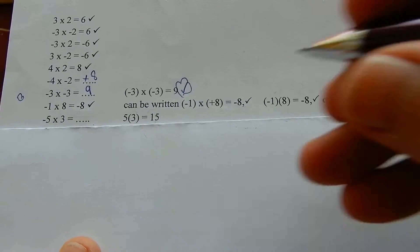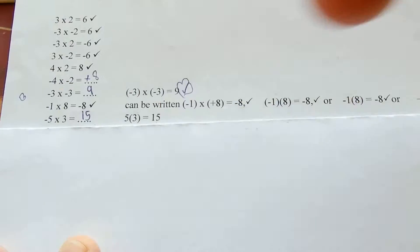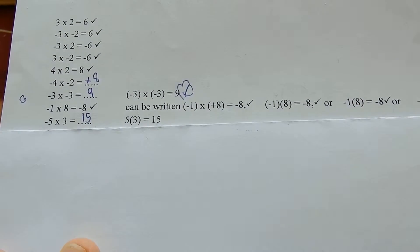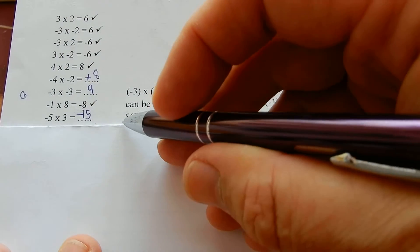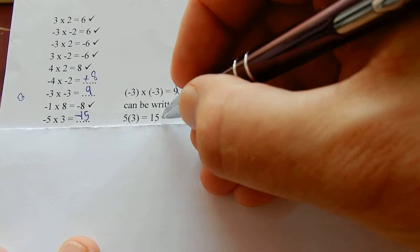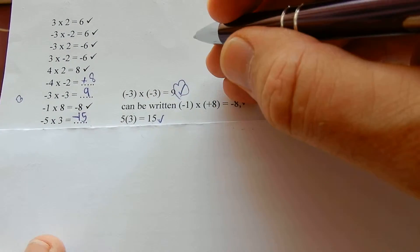5 times 3 is 15. Is there an odd number of minuses? Yes, 1 is an odd number. 5 times 3 is 15.